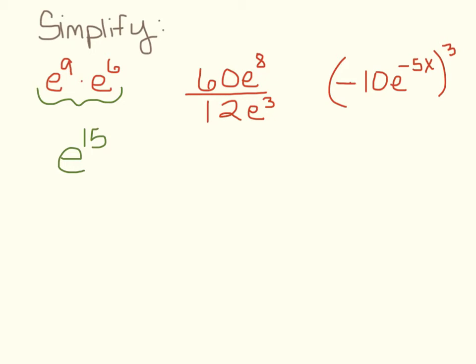Or if we were to simplify 60E to the 8th over 12E to the 3rd, 60 divided by 12 is 5, and then E to the 8th over E to the 3rd, we're going to subtract our exponents. 8 minus 3 is 5.